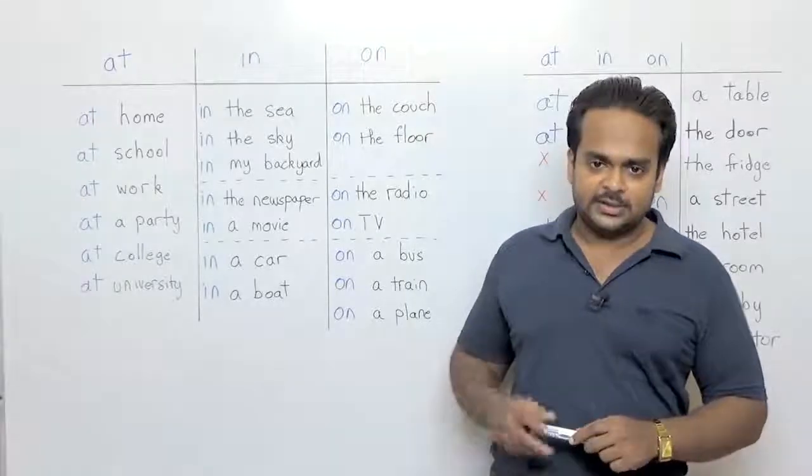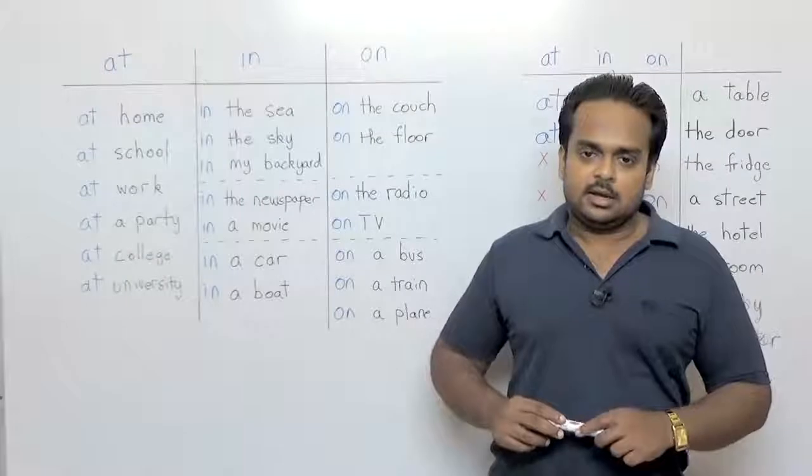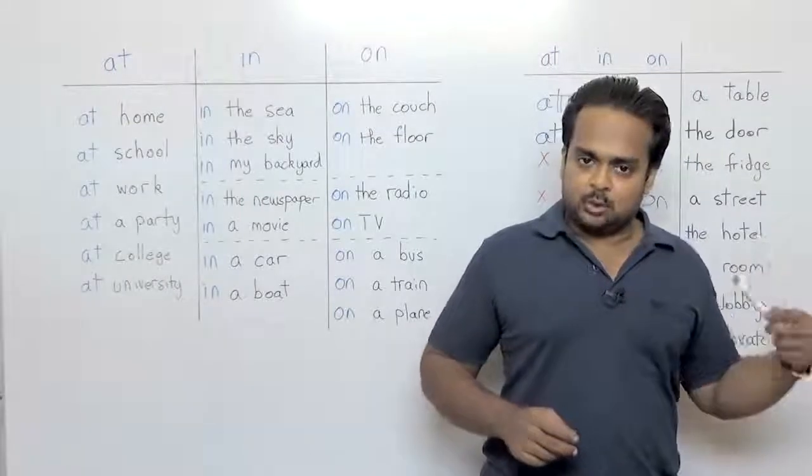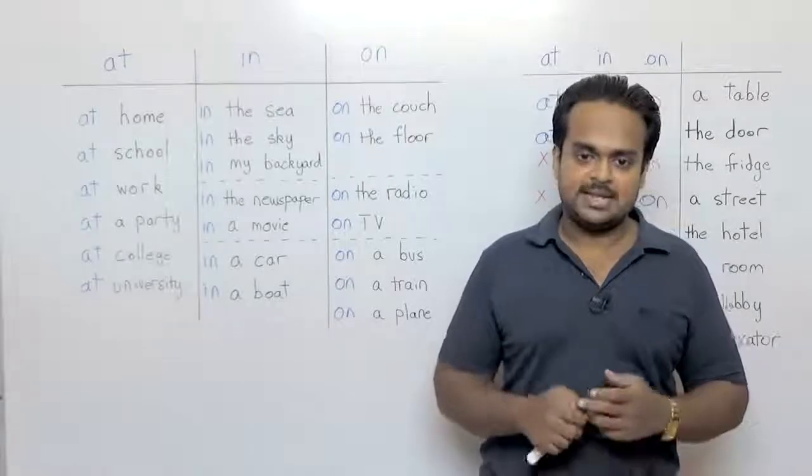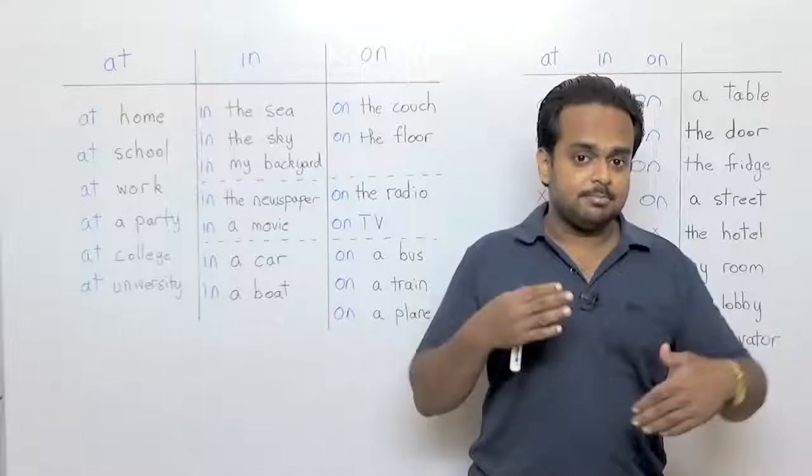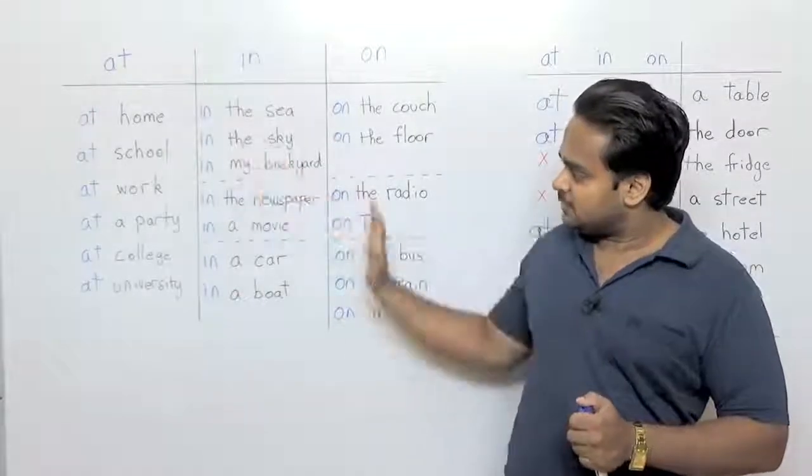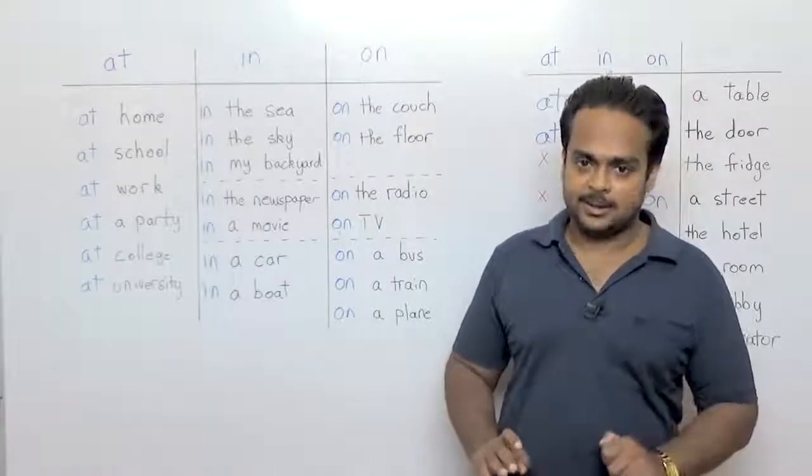We call these fixed expressions because these don't change. Now in the examples that we just discussed like with tables for example, you can be sitting at a table or there can be things on a table and the meaning is different. But with these the expressions never change and the meaning is always the same.